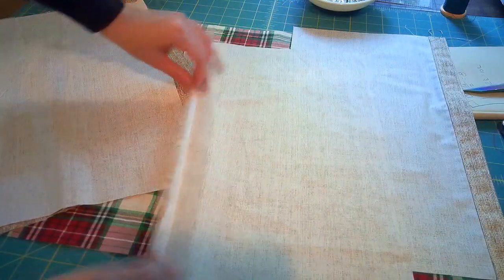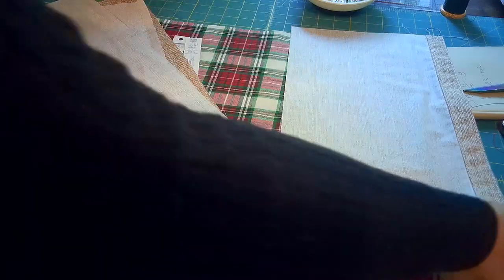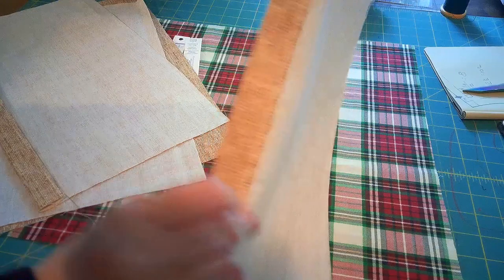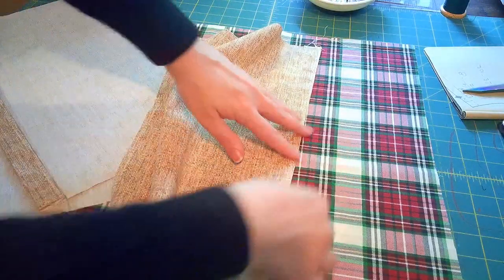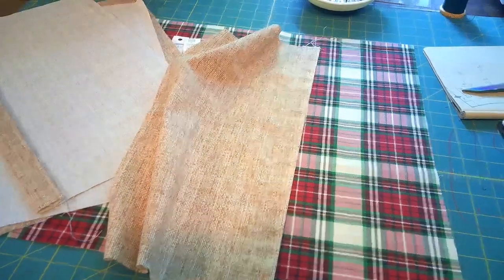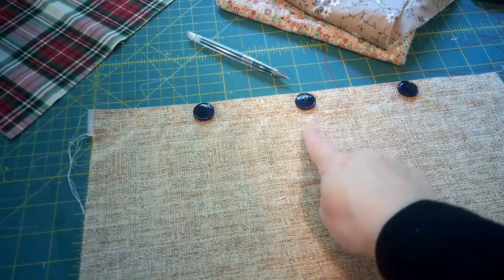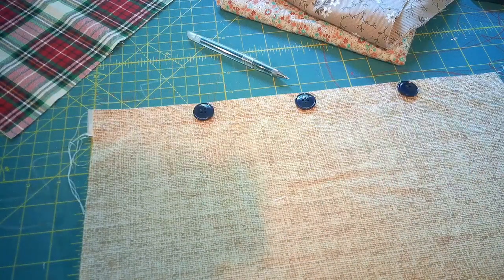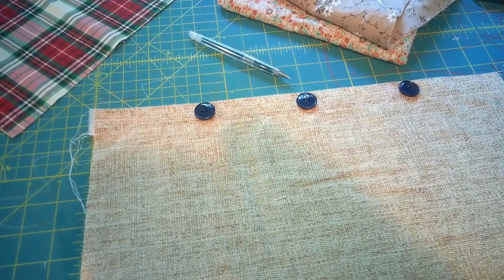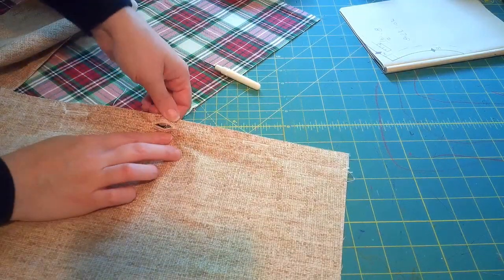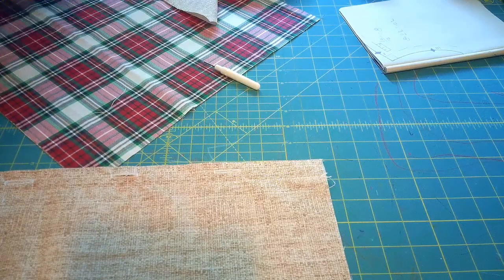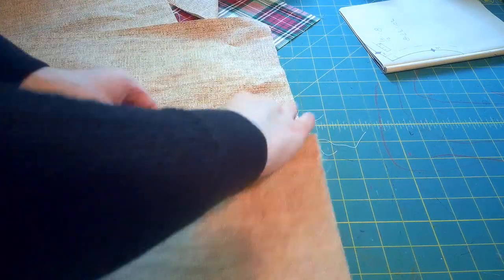So then you turn that edge up to meet the edge of the interfacing like I did here, so that it lays flat. And then you want to do two lines of seam, sewing the two edges down. One edge at just along the fold line and the other edge along the edge of the fold. This will give you a good solid base for the buttons and the buttonholes.